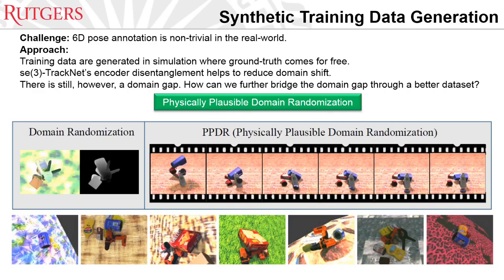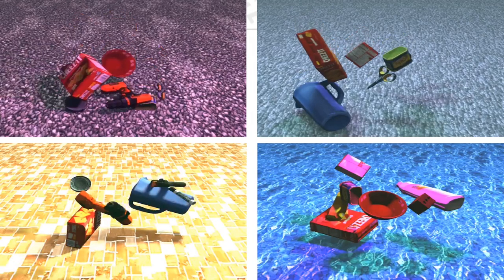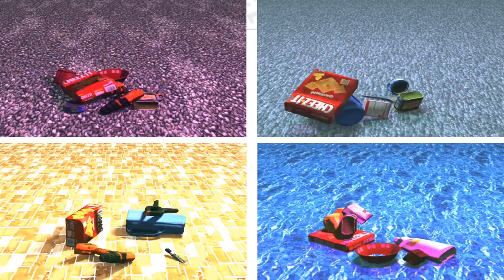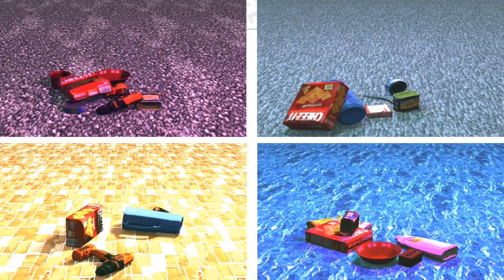Here is a comparison between standard domain randomization and physically plausible domain randomization. In physically plausible domain randomization, the objects' poses are randomized at the beginning, and then some steps of physical simulation are applied until stable placement of the objects on the tabletop. The textures of the background are also randomized in addition to the lighting conditions and viewing angles of the camera poses. In the bottom row, we show some example generated synthetic data.